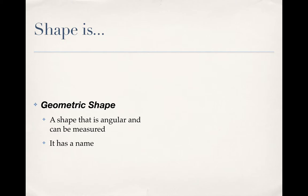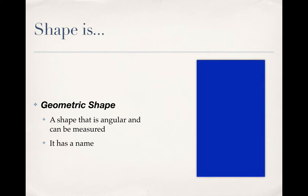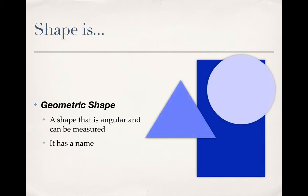We have two different types of shape that we talk about. The first is geometric. These are shapes that are angular and can be measured. They usually have a name.